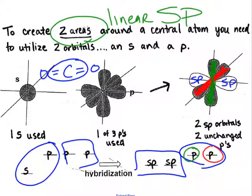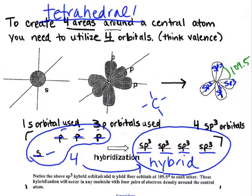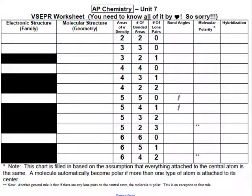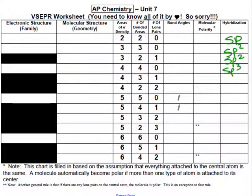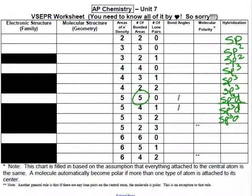Now let's go back to the table and fill in the hybridization. Two areas gives sp; three areas gives sp2; four areas gives sp3. With five areas, since there's an expanded octet, we need to find a fifth orbital from the D subshell, giving five orbitals each named sp3d. Anything with five areas is sp3d. And if you need six areas, we add another D orbital, giving sp3d2 for those structures.